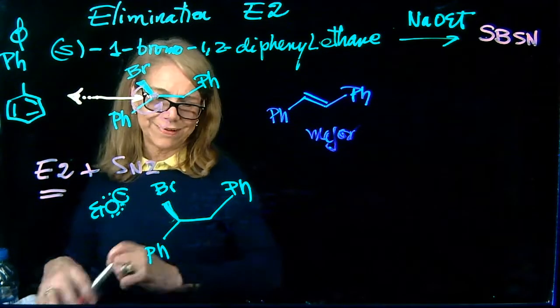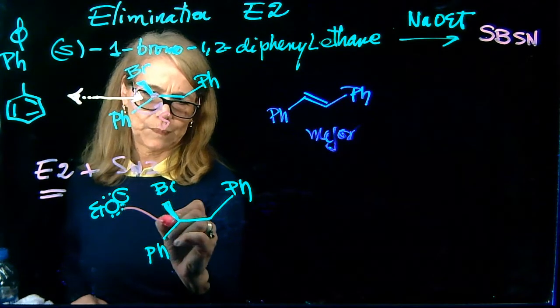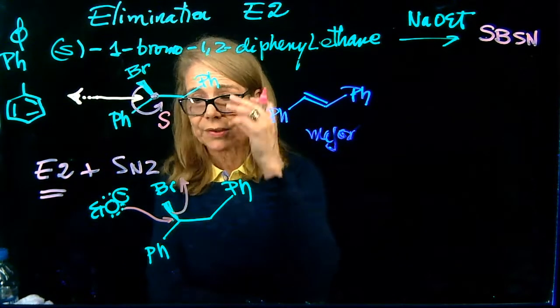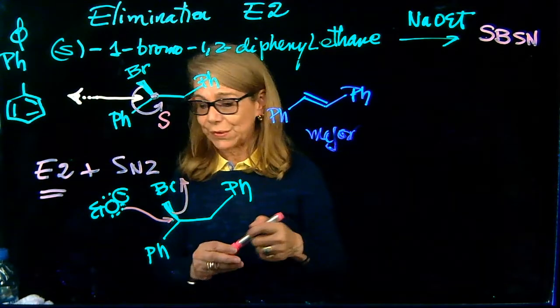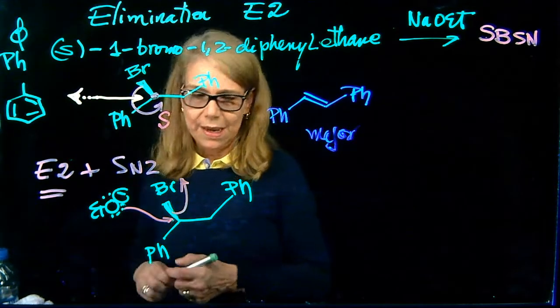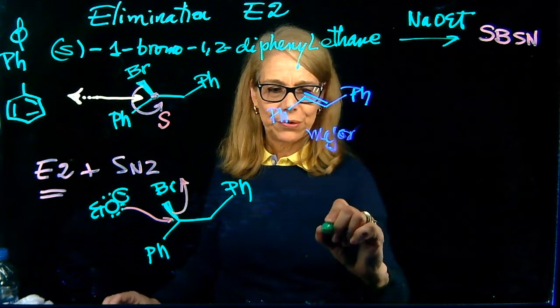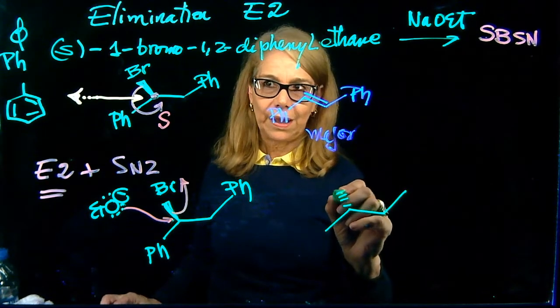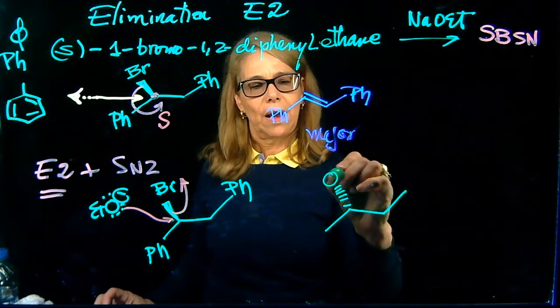So, let's do the right arrow. And then we're going to have the, in a concerted fashion, the departure of the leaving group. So the other product that forms, is a substitution, but you are going to have, since the attack is on the back, this will have an inversion of configuration.